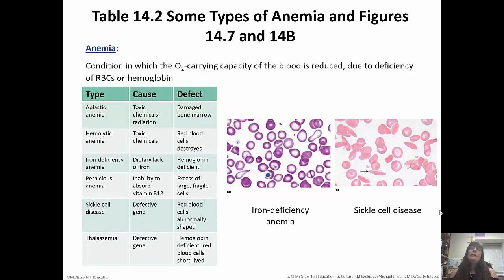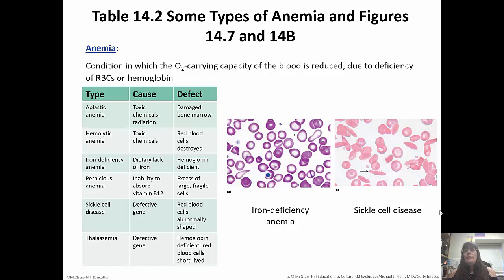Anemia occurs if you have a low oxygen-carrying capacity — you do not have enough red blood cells or not enough hemoglobin. Sickle cell anemia is when you have an abnormal hemoglobin strain, which causes the red blood cells to form a sickle instead of the nice biconcave disc, so they can't carry oxygen as well. There's also aplastic anemia, hemolytic anemia, and iron deficiency anemia. Iron deficiency anemia is common and is due to a lack of iron in our diet. Thalassemia is an actual defective gene, so you have red blood cells that don't live very long because they're hemoglobin deficient.